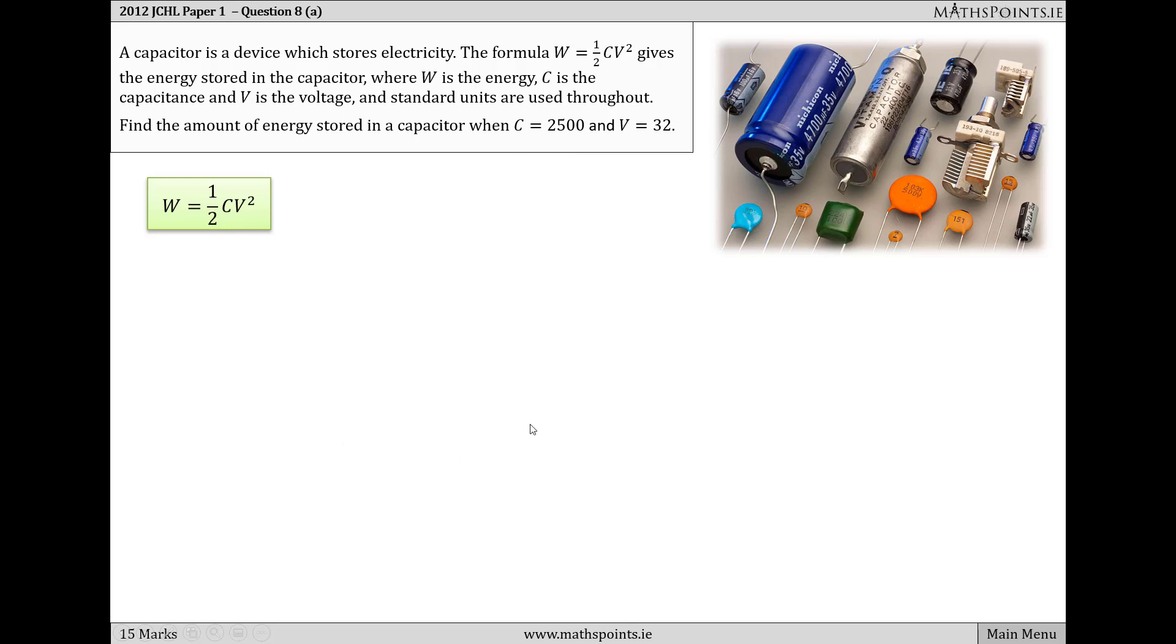This is a simple substitution question. We're going to sub the values of C 2500 and V 32 into the formula for energy, W equals a half CV squared.